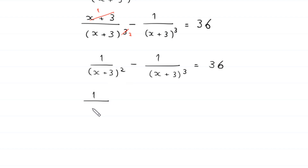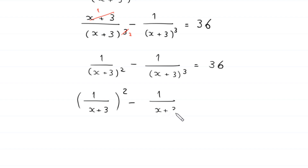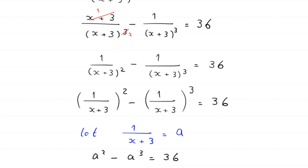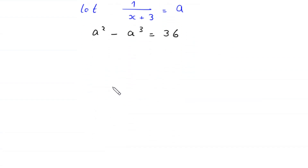This can be written as 1/(x+3)² minus 1/(x+3)³ = 36. Now let 1/(x+3) = a. So this equation becomes a² minus a³ = 36.